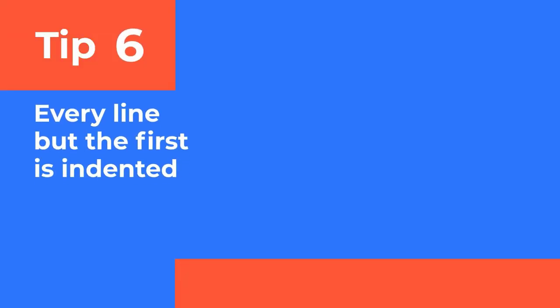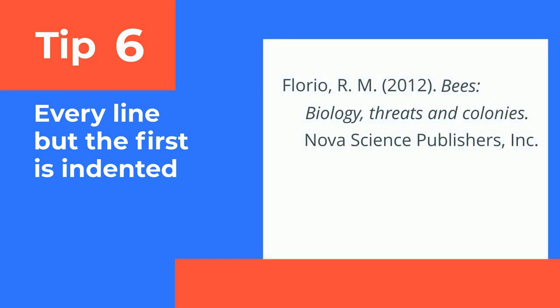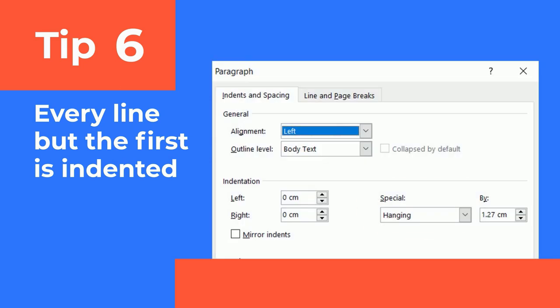Tip 6 – If a citation is more than one line, every line but the first is indented. It looks like this. This is called a hanging indent. Don't worry, you can set this up automatically in Microsoft Word.